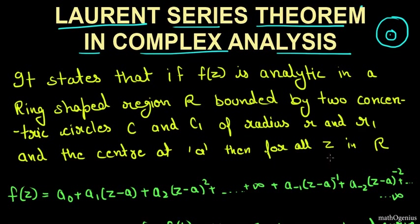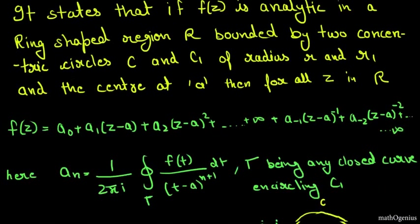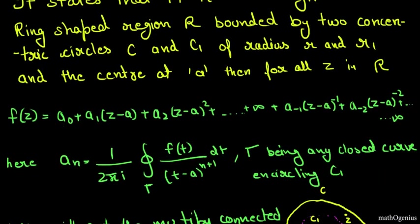For all Z in R, the function F(z) can be written as the Laurent series expression. The coefficients a_n are given by: a_n equals 1 upon 2πi, the integration along a curve of F(t) divided by (t minus a)^(n+1) dt, where gamma is any closed curve encircling C1.